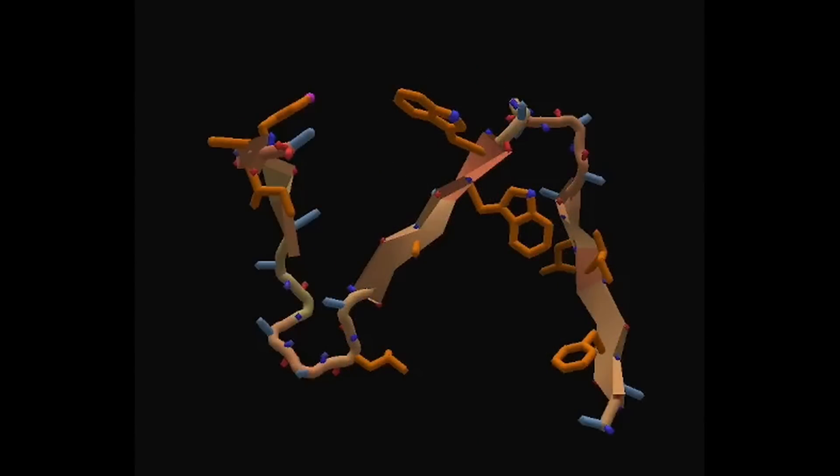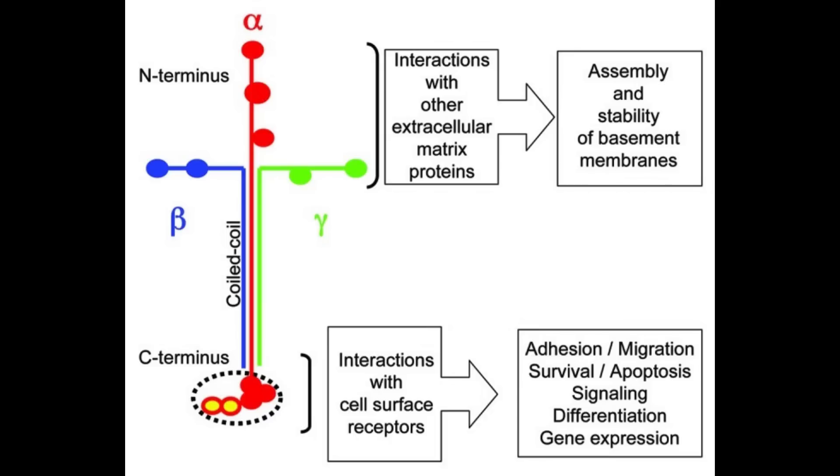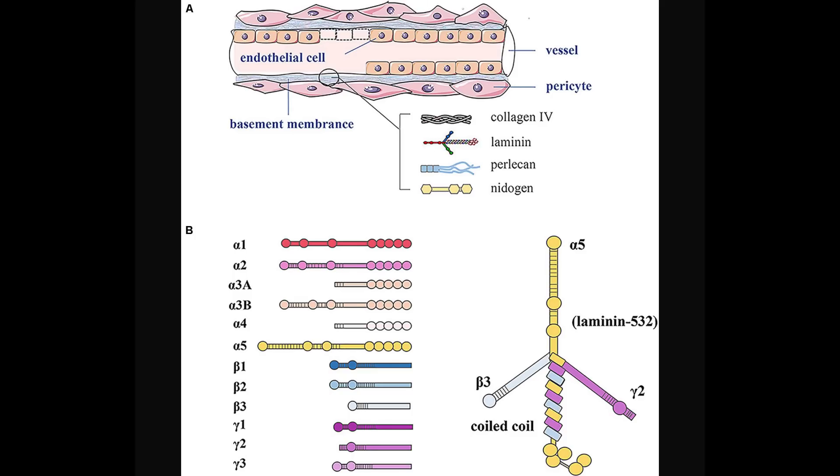Laminin itself has 2 cell attachment sites. One can be found on the short arm, marked P1 here, and the other on the long arm marked E8. The E8 site is much higher affinity than that on the short arm or P1. The short arm site is not always active, but it can be made active.